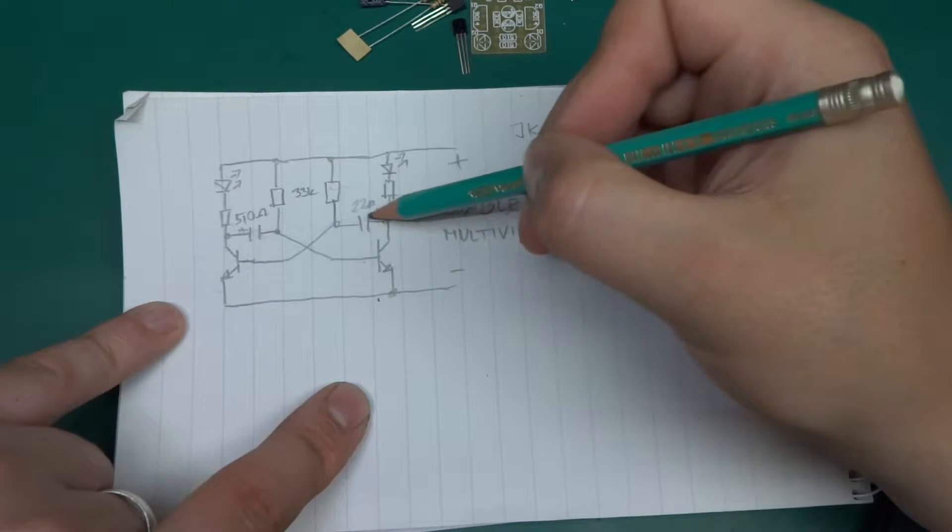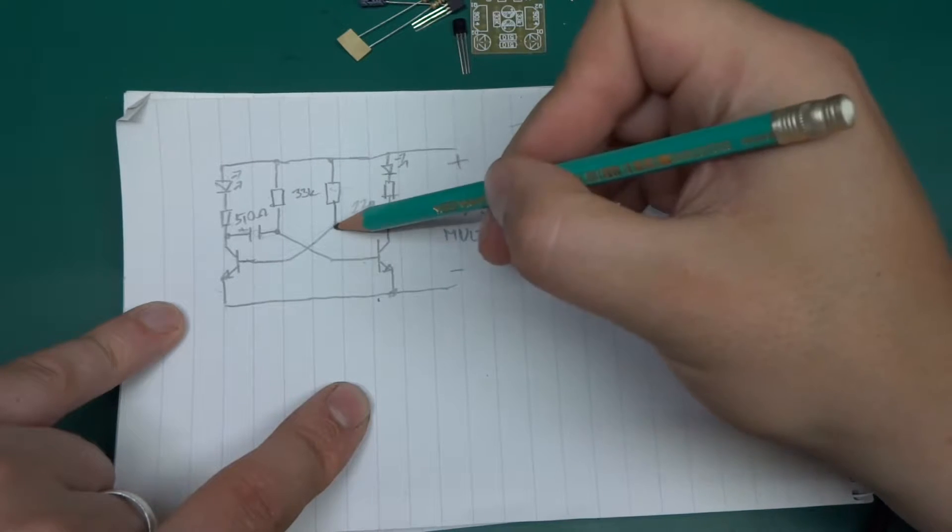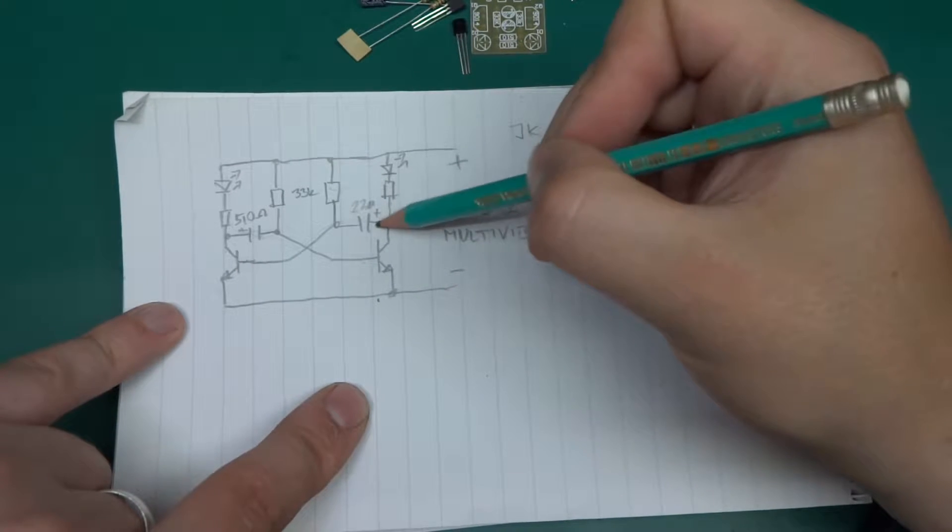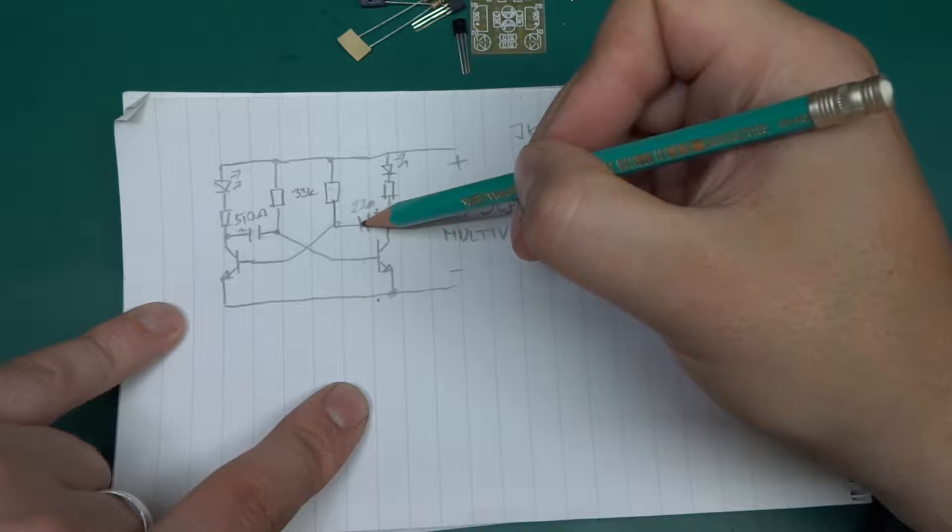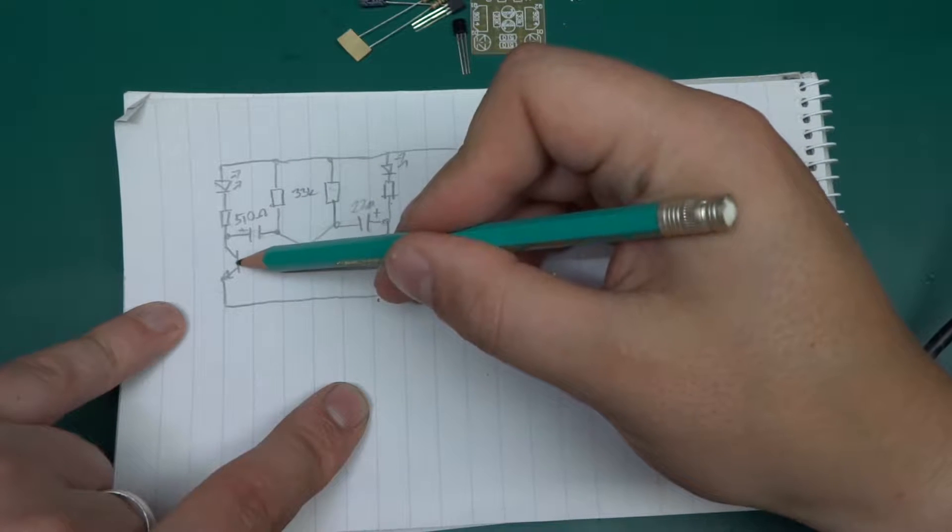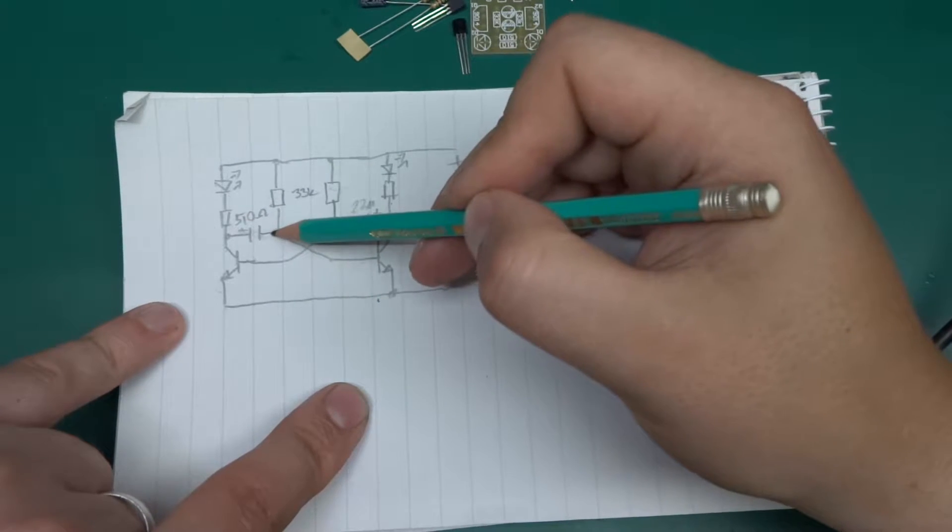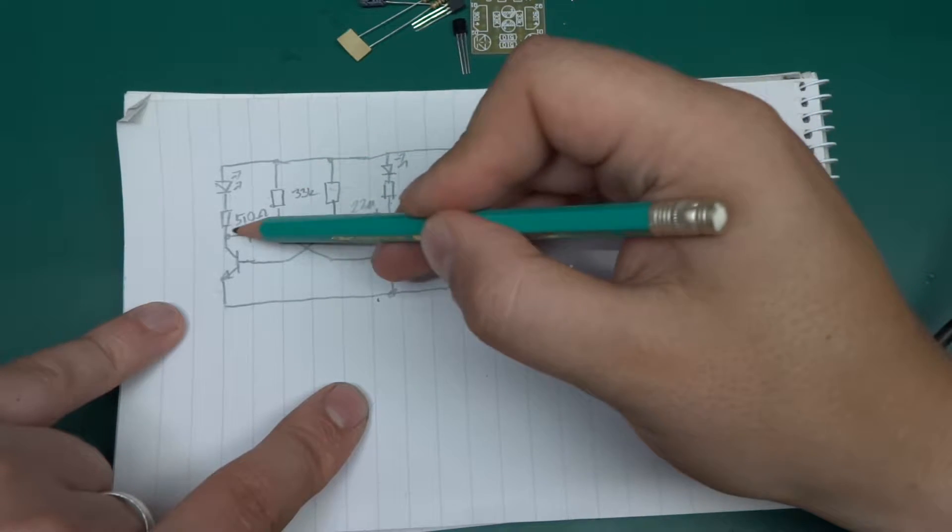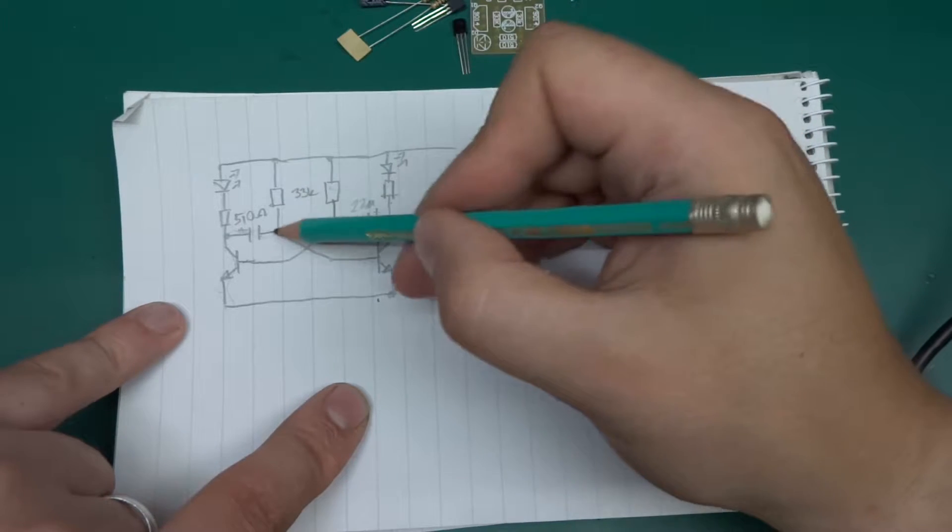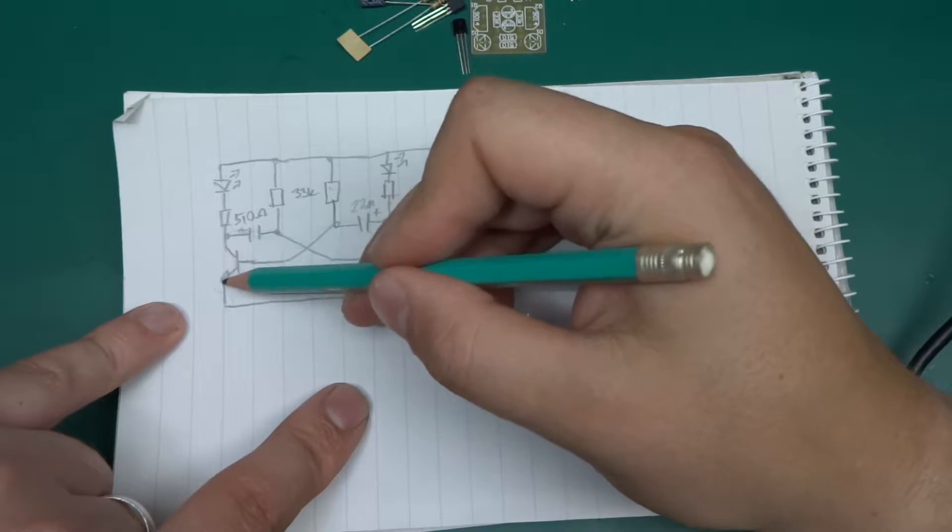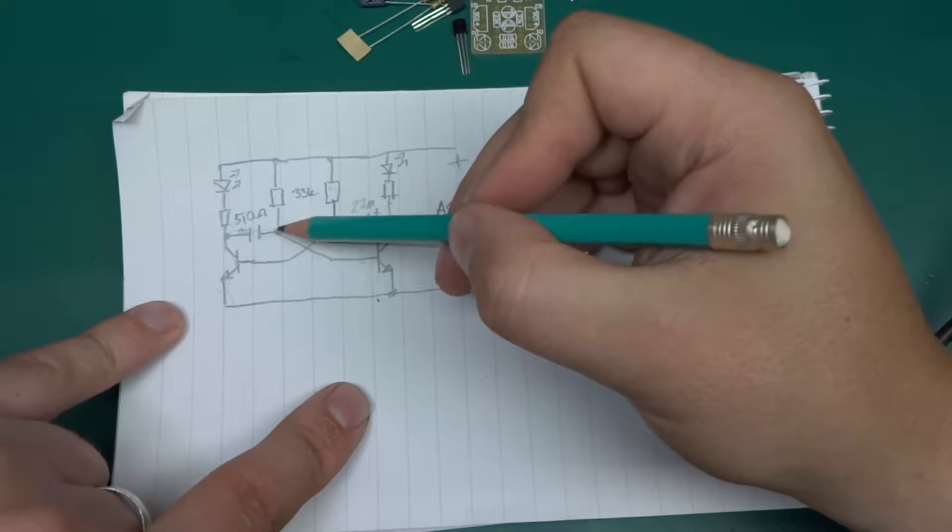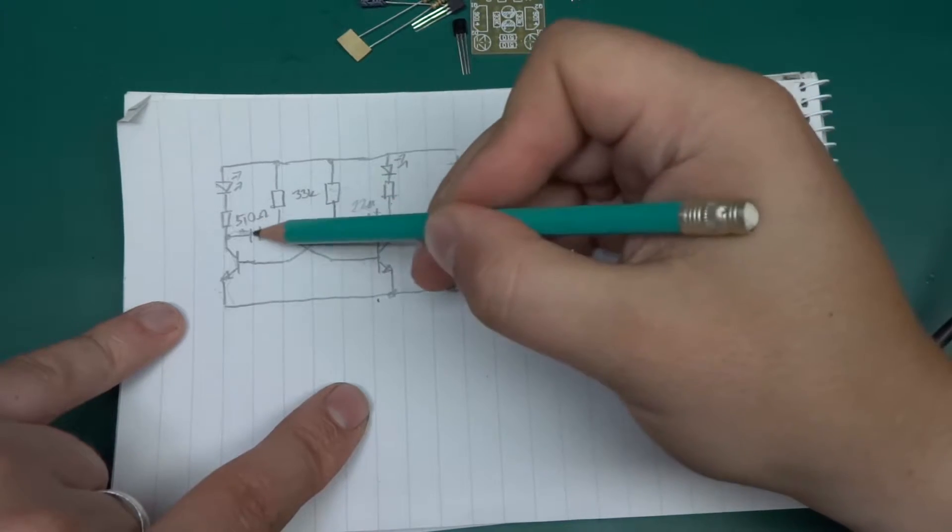When one transistor is switched on, it pulls down and charges the cap backwards. By doing that, it makes this point low potential, which switches off this transistor up until the point where it's fully charged. Then, because there's a 33k resistor over here, this becomes high potential, so it switches on this one.